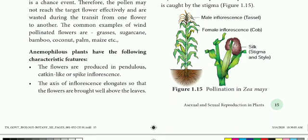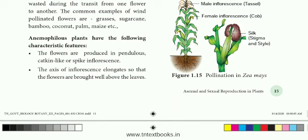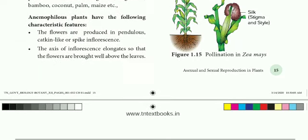The first character: the flowers are produced in pendulous, catkin-like, or spike inflorescence. Inflorescence type is important. A pendulous or catkin-like inflorescence hangs down and is very long, which helps the pollen to be released easily into the air. Spike inflorescence is another type found in these plants.